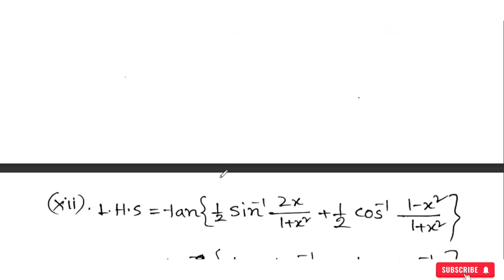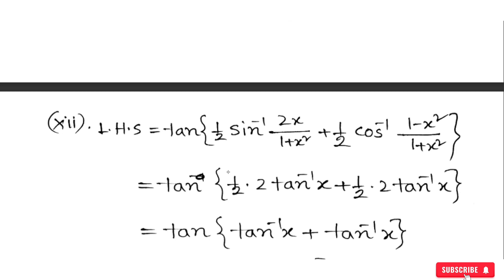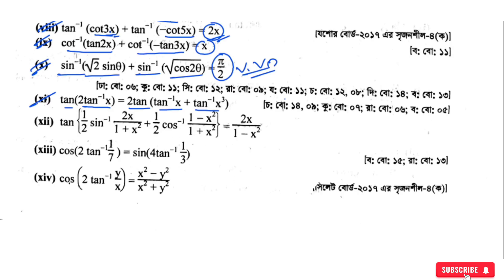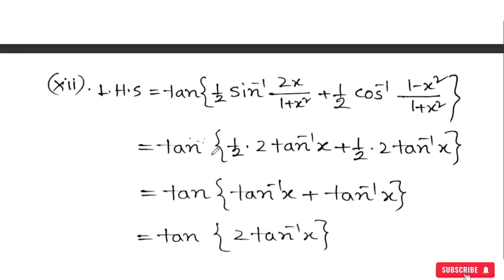I think this is good. So now we have: ½·sin⁻¹(2x/(1+x²)) + ½·cos⁻¹((1-x²)/(1+x²)). OK. So what do we have to solve? Now we have the left hand side: ½·sin⁻¹(2x/(1+x²)) + ½·cos⁻¹((1-x²)/(1+x²)). Then we have taken sin⁻¹(1+x²) and you have tan⁻¹x.